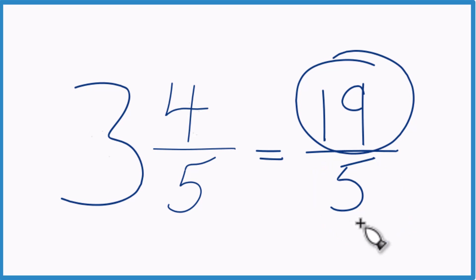And these are equivalent. They have the same value. 3 and 4 fifths equals 19 fifths. It's just that we've represented them differently.